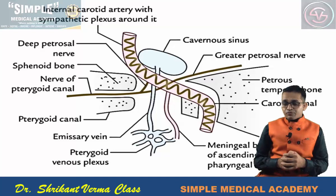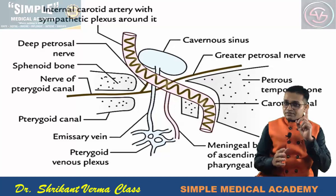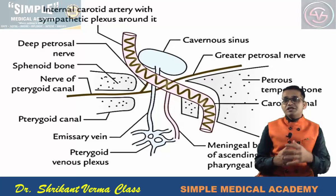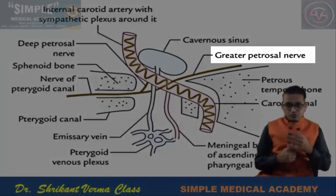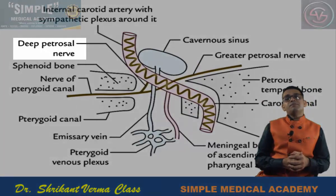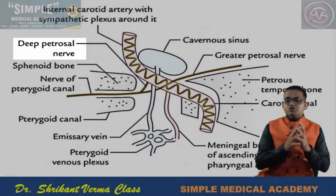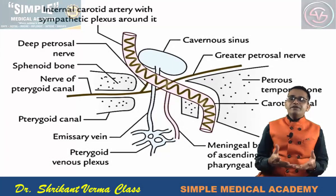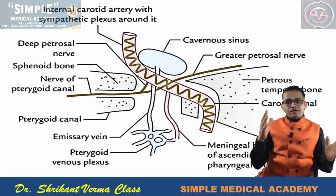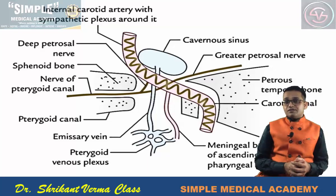The petrous part of the temporal bone is related to nerves known as petrosal nerves. There are three important petrosal nerves: one large nerve superficially located, called the greater petrosal nerve or greater superficial petrosal nerve; one deeply running in the petrous part called the deep petrosal nerve; and one with a very small course, the lesser petrosal nerve, which passes through the foramen ovale and participates in the secretomotor pathway of the parotid gland.